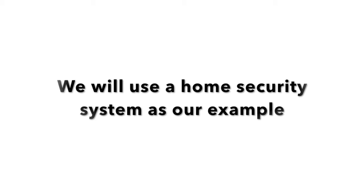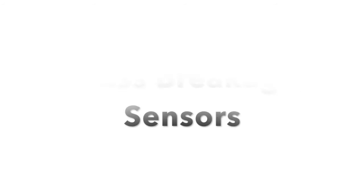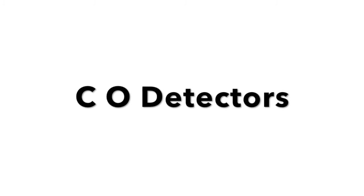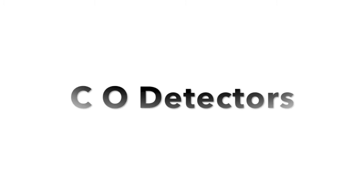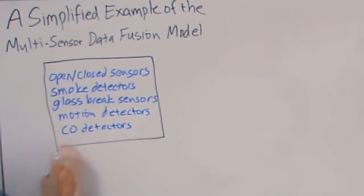With a home security system, you have a lot of different things. You have open and closed sensors, smoke detectors, glass breakage sensors, motion detectors, CO detectors for carbon monoxide. And all of these are the actual sensors that we call Level Zero. This is the basic sensor that we get.